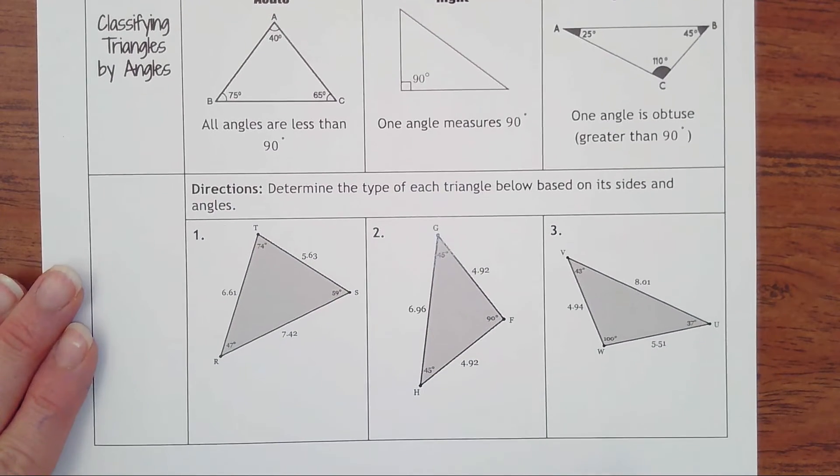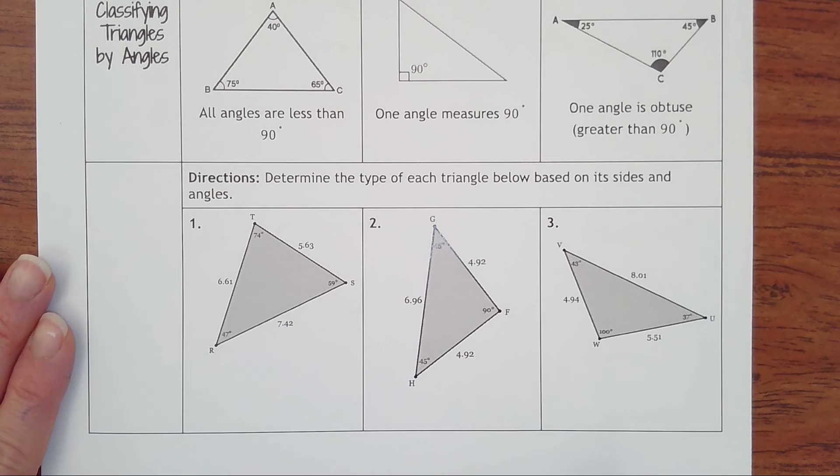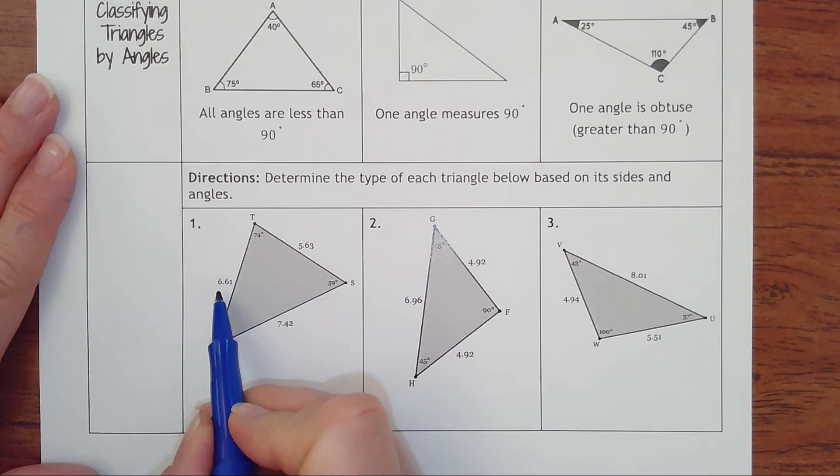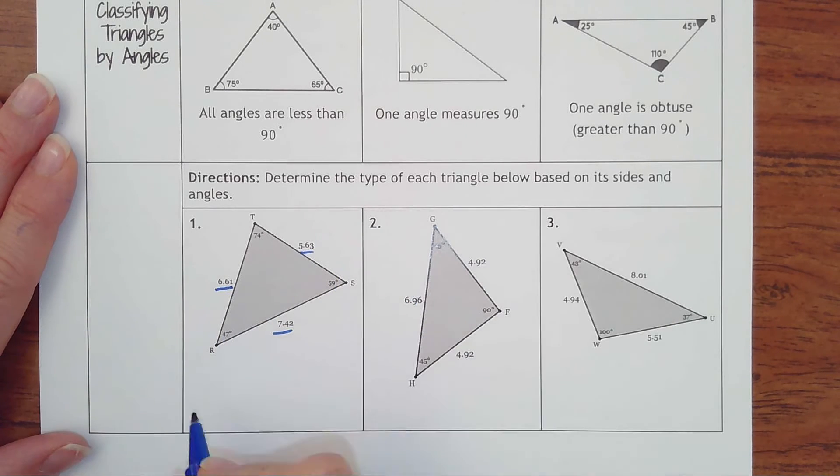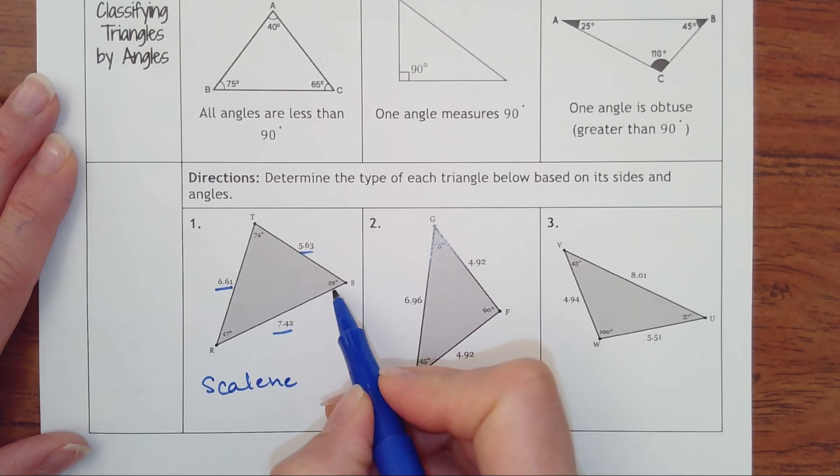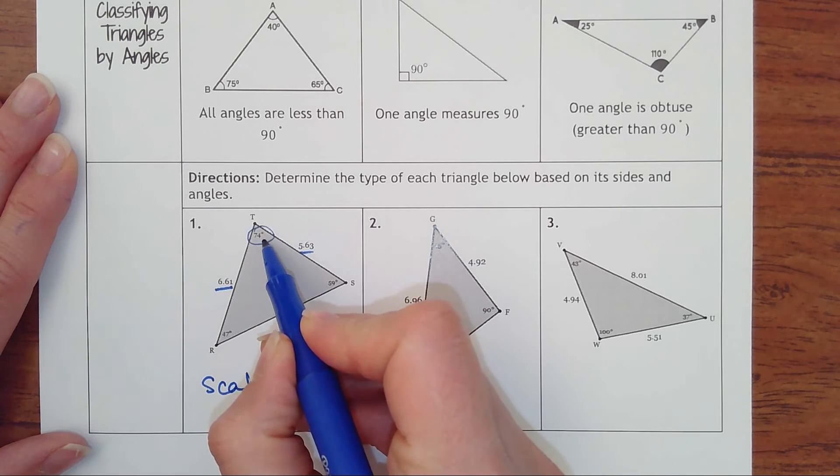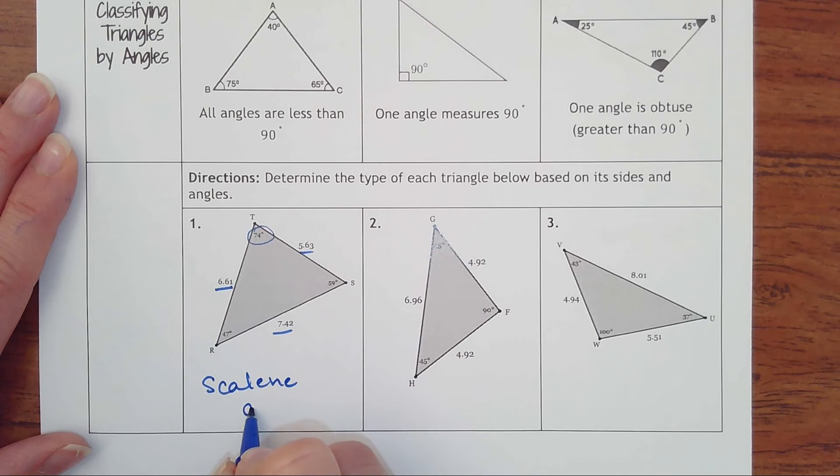So we'll try three problems real quick. You should have two words for each of these triangles. In number one, I look at the sides. I have 6.61, 7.42, and 5.63. Those are all different, so that would be scalene. And then I'm going to look for the biggest angle, which is 74 degrees. That's still less than 90, so it would be acute.